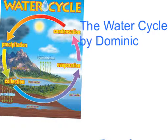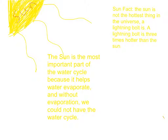The Water Cycle by Dominic. The sun is the most important part of the water cycle because it helps water evaporate, and without evaporation we could not have the water cycle. Sun fact: the sun is not the highest temperature thing in the universe — a lightning bolt is. A lightning bolt is three times hotter than the sun. This is my picture of the sun.